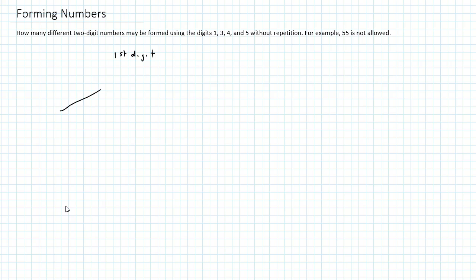The possibilities for the first digit could be 1, it could be 3, it could be 4, or it could be 5. There are four possibilities.